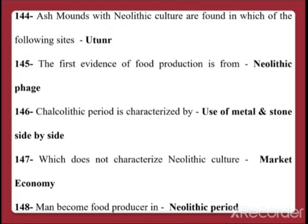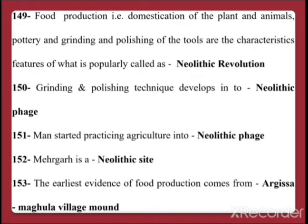Question 148: Man became a food producer in the Neolithic period — humans started agriculture and food production in the Neolithic period. Question 149: Food production, that is domestication of plants and animals, pottery, and grinding and polishing of tools are the characteristic features of what is popularly called the Neolithic Revolution. Question 150: Grinding and polishing techniques developed in the Neolithic phase.